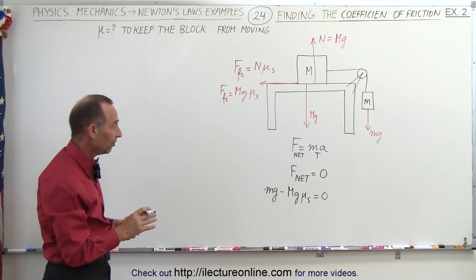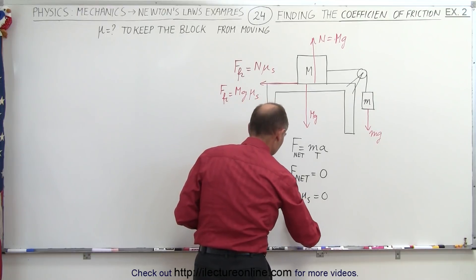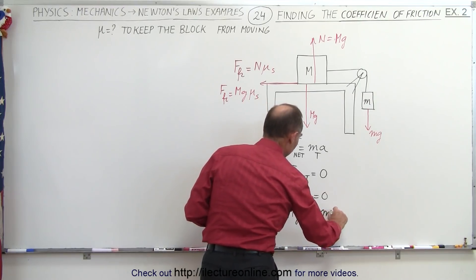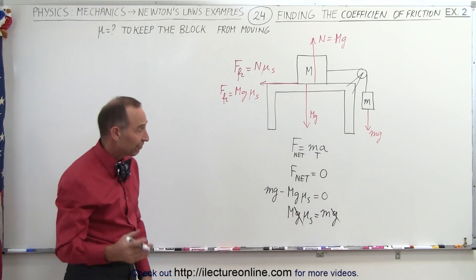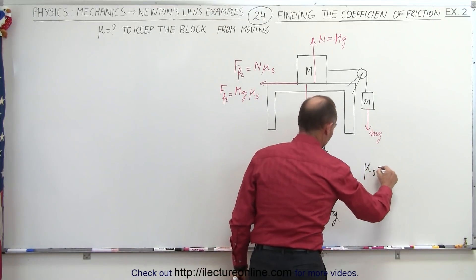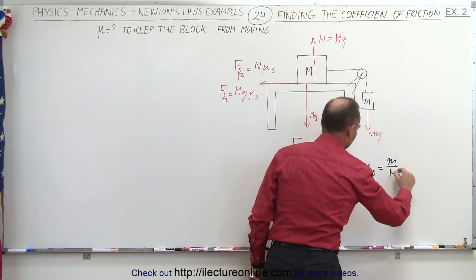Since we're looking for Mu sub s, we can go ahead and move this to the other side and turn the equation around. That gives us Mg Mu sub s is equal to little mg, and then you realize that the g's cancel on both sides of the equation. And then finally, Mu sub s can then be found by saying that it's equal to M divided by the big M.